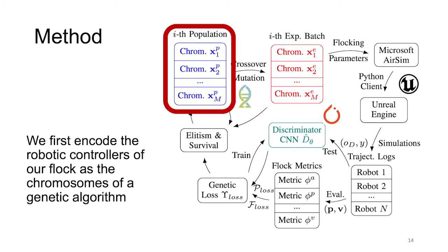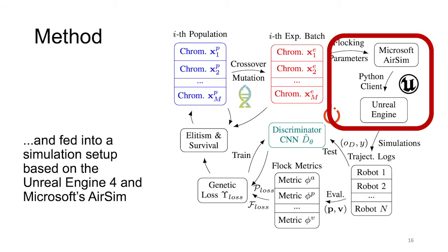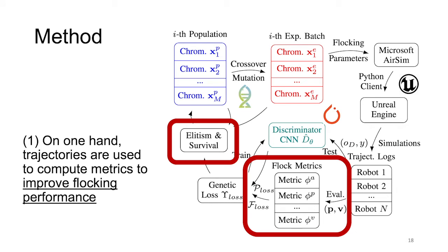Our method can be visualized as in this block diagram. We first encode the robotic controllers of our flock as the chromosomes of a genetic algorithm, which are evolved using classical genetic operators, and then fed into a simulation setup based on Unreal Engine 4 and Microsoft's AirSim. The results of these simulations then follow two parallel routes: trajectories are used to compute nine flock quality metrics, including average flock velocity, trajectory tracking error, and others to improve flocking performance.